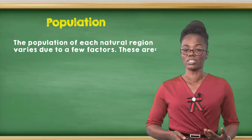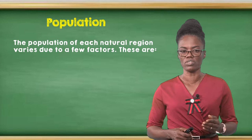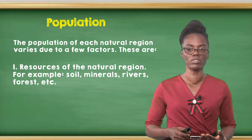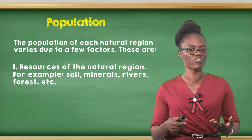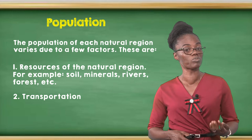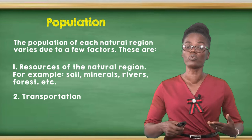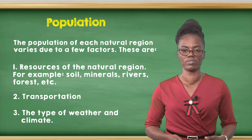The population of each natural region varies due to a few factors. These are the resources of the natural region — for example, the soil, the minerals, the rivers, the forests, etc. Those resources can influence the number of persons or the type of population that dwells there. Next, we have transportation, which is another factor that affects population. And finally, the type of weather and climate.